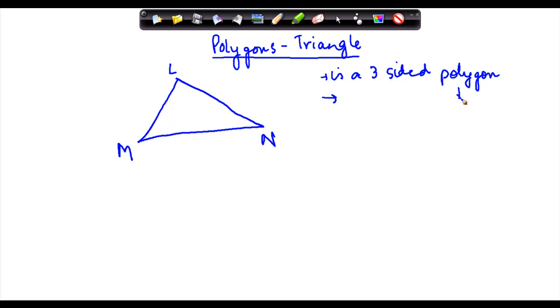We know what a polygon is. A polygon is a kind of figure which is formed entirely by line segments, and it is a closed figure. So in that case, a three-sided polygon is called a triangle, and it's the minimum number of sides required to form a polygon.